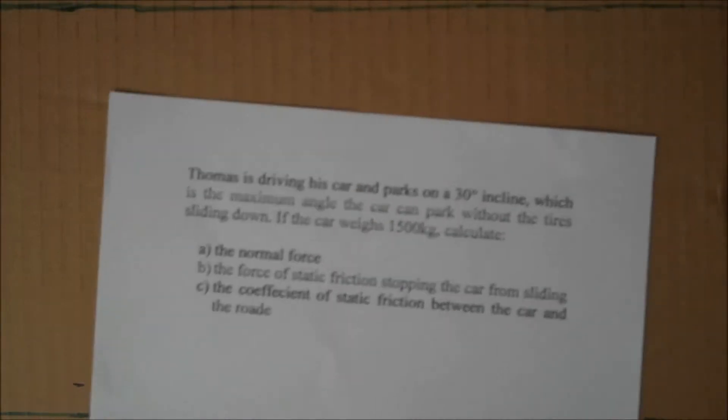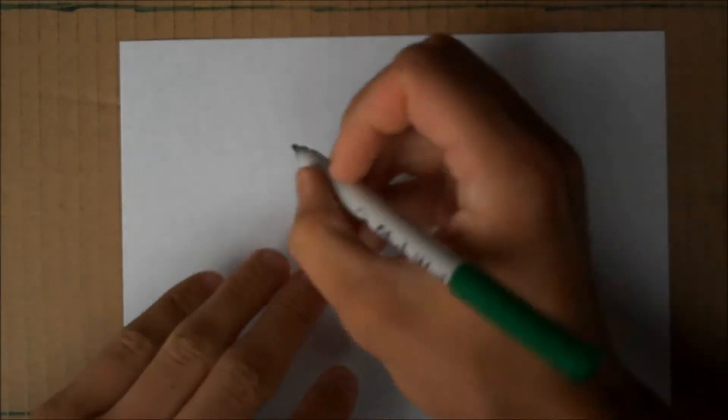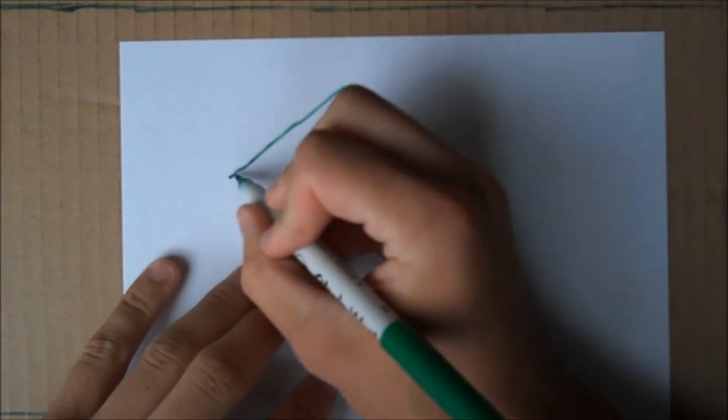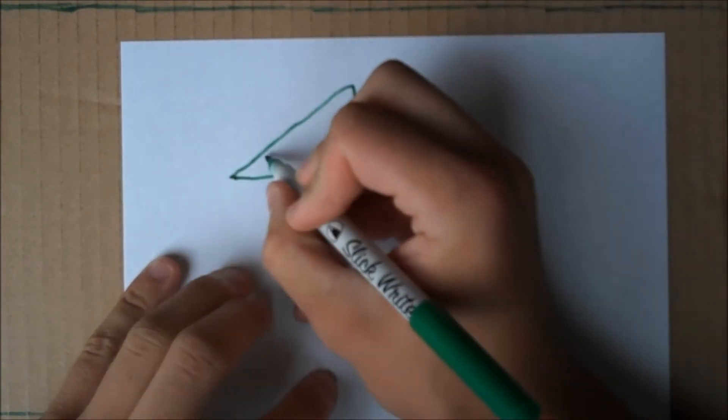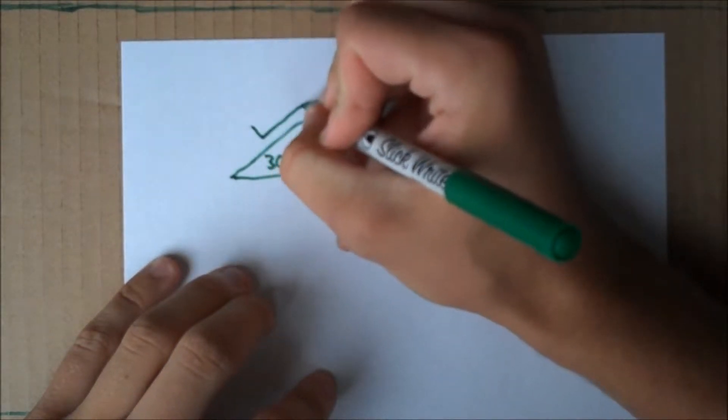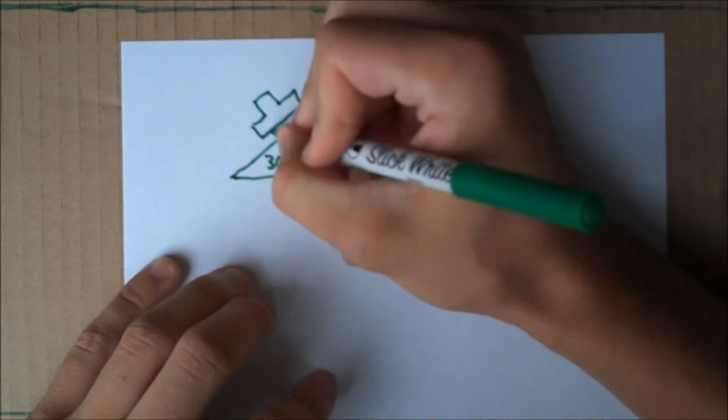To start this problem, let's draw a sketch. We have a car parked on a 30 degree incline. So there's our incline, and there's our car.